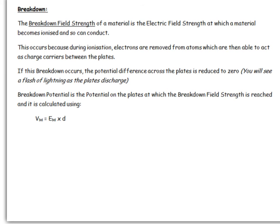The breakdown field strength of a material is the electrical field strength at which the electrical field is strong enough to rip an electron off an atom of a particular element. This causes a spark to jump between the two plates, where it actually looks like a lightning strike, because essentially you now have a free electron able to be a charge carrier.